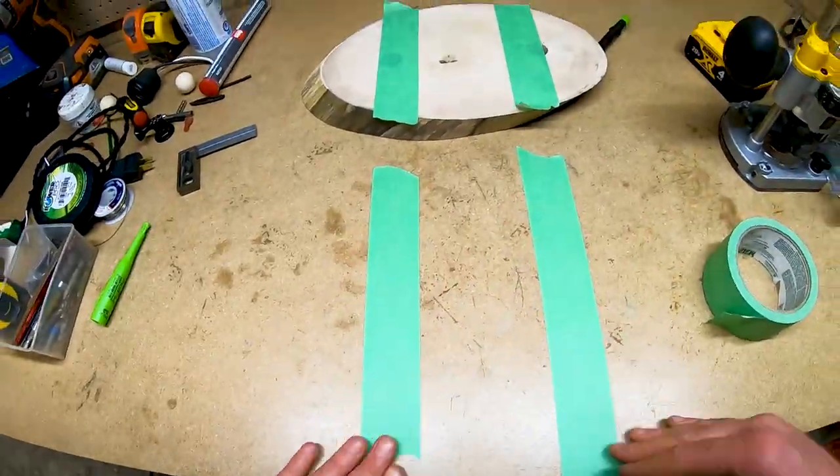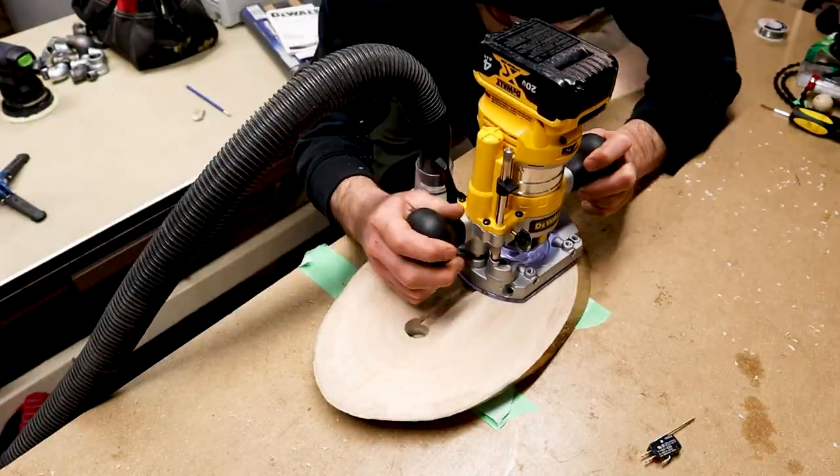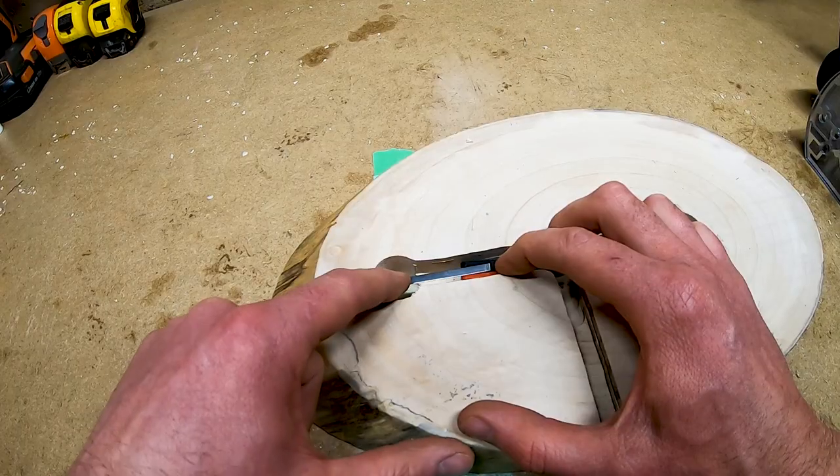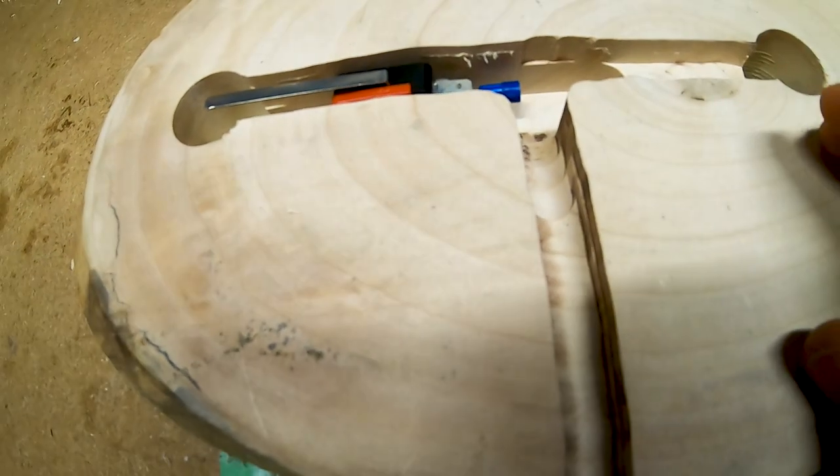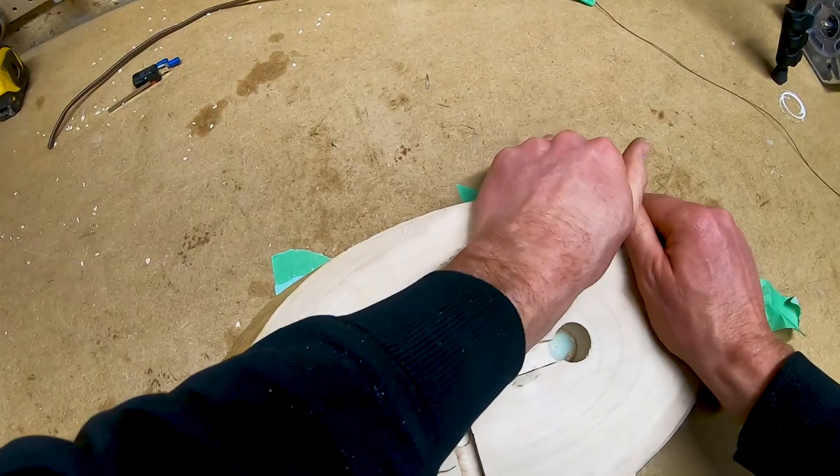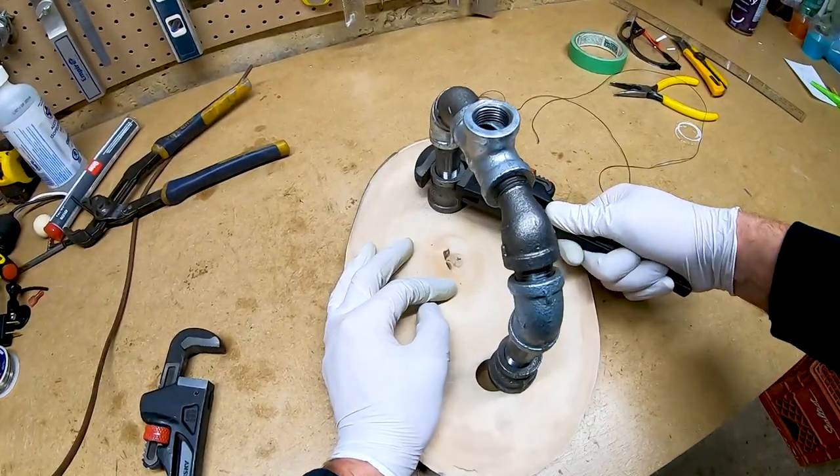I used a compact router with a half-inch straight bit to remove the material. After making multiple passes, the switch was able to fit inside. You can see how I stepped down the channel and rounded the corners so the wiring could sit naturally. Removing the wood was as simple as prying it up and pulling off the tape.